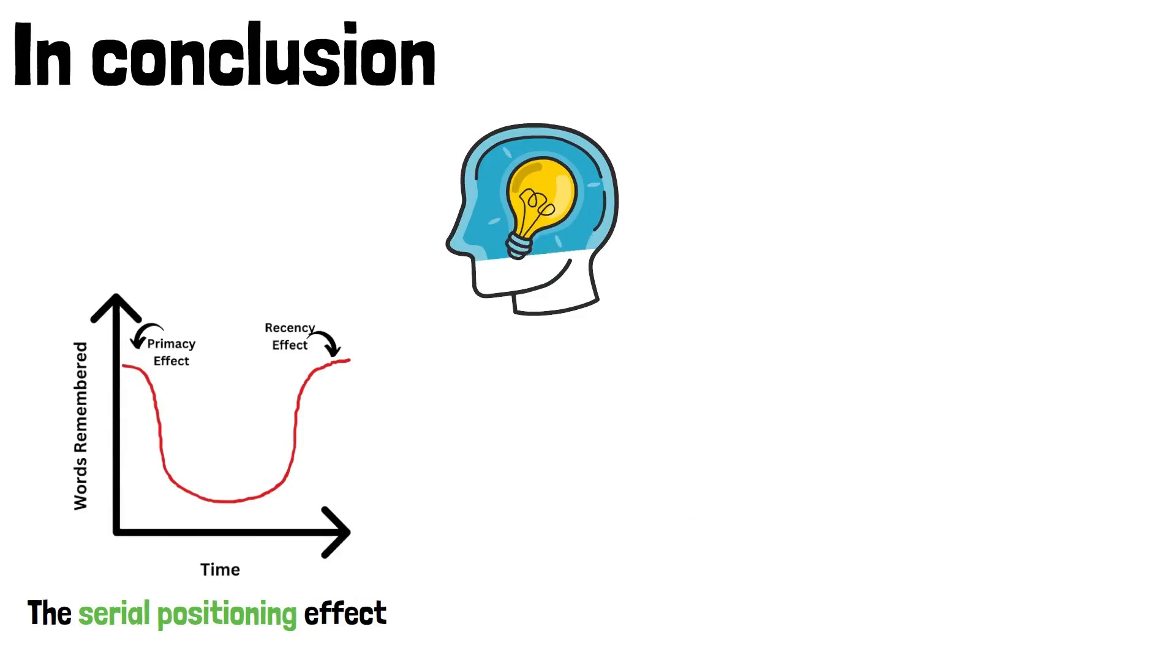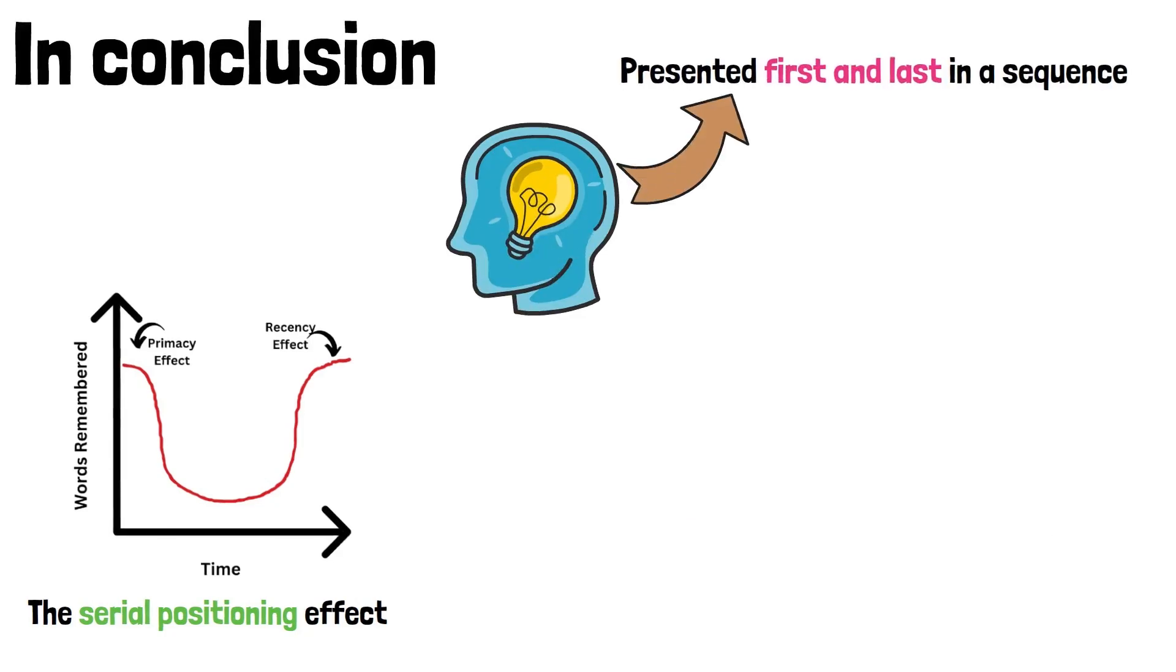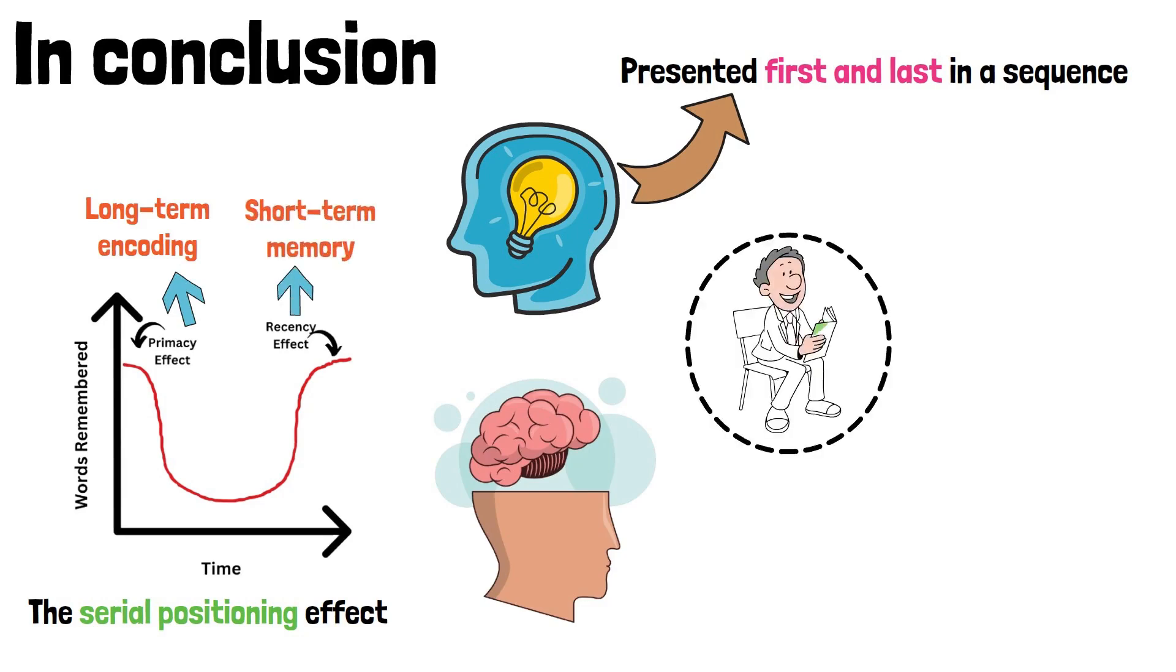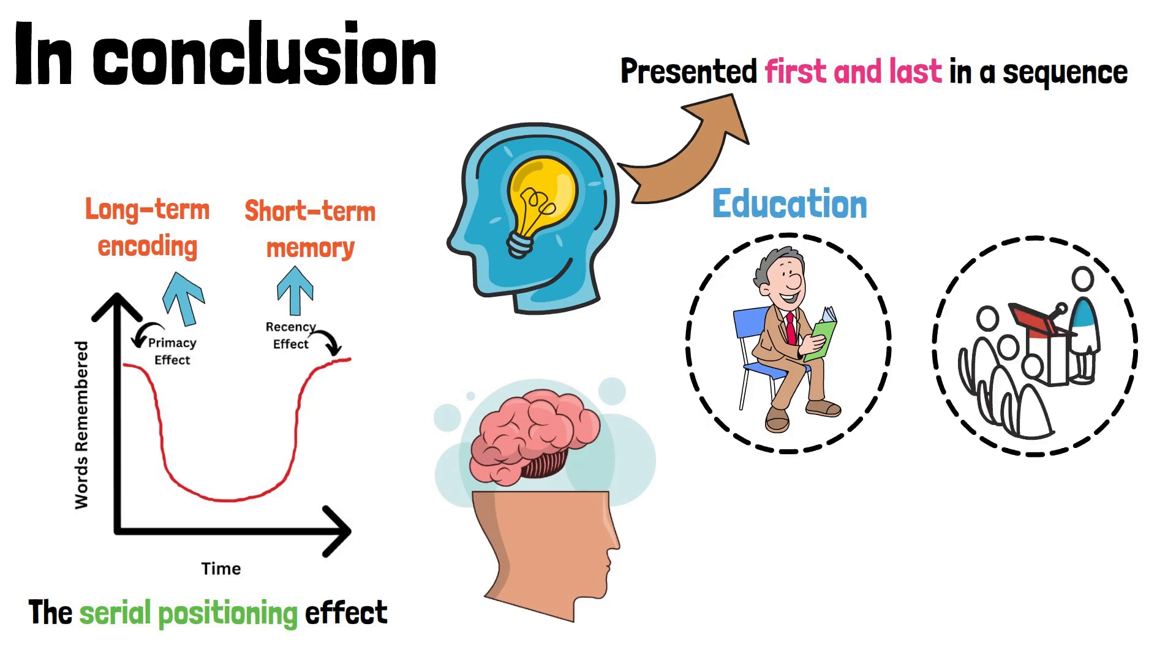In conclusion, the Serial Positioning effect, driven by the Primacy and Recency effects, reveals how memory favors information presented first and last in a sequence. Each effect relies on different memory systems, with Primacy benefiting from long-term encoding and Recency taking advantage of short-term memory. This insight has been applied to areas ranging from education to marketing, showcasing the value of understanding how memory functions in different contexts.